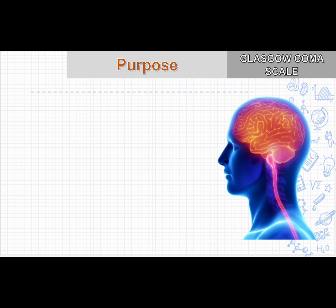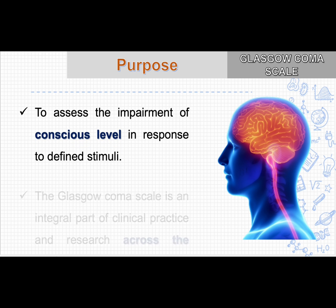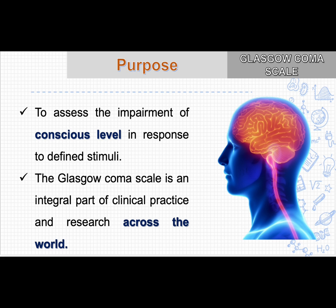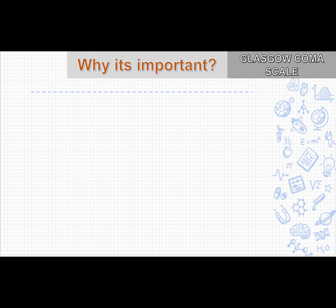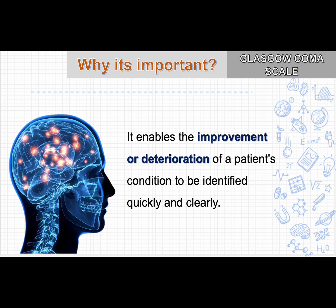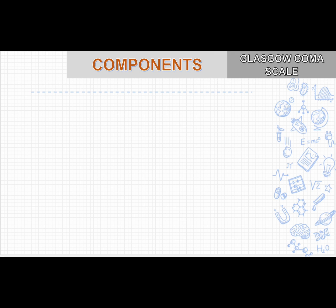Let's see the purpose of GCS. It is a reliable and objective way of recording the level of consciousness. It also describes the depth and duration of impaired consciousness or coma. It is important because patient consciousness can be identified quickly and clearly, whether there is any improvement or deterioration of the patient's condition. Now let's see about the components of GCS, which are very important to analyze the consciousness of the patient.